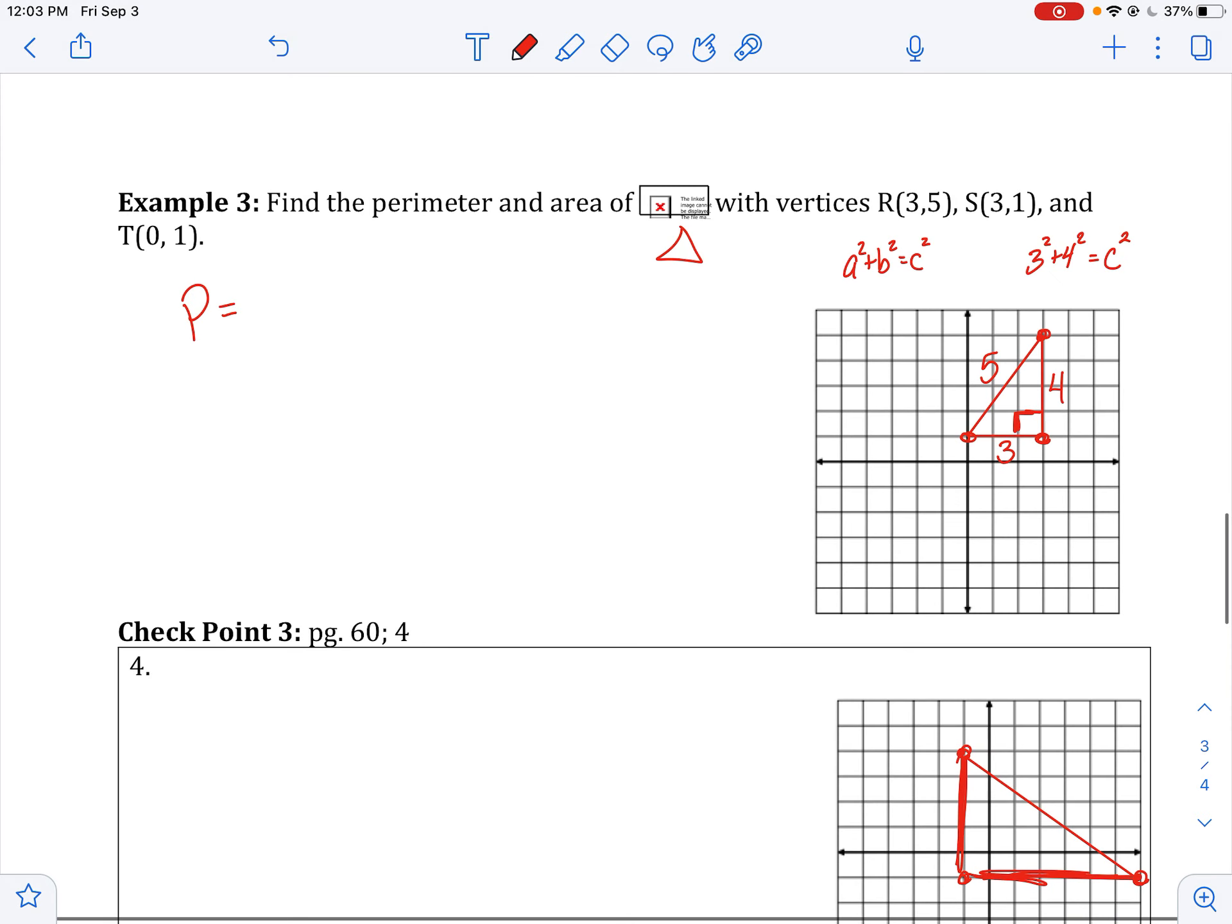So my perimeter is 3 plus 4 plus 5, which is 12 units. And my area is going to be 1 half base times height.